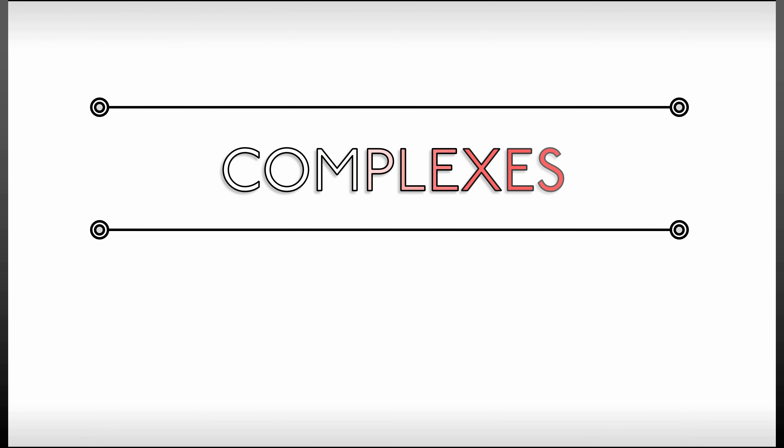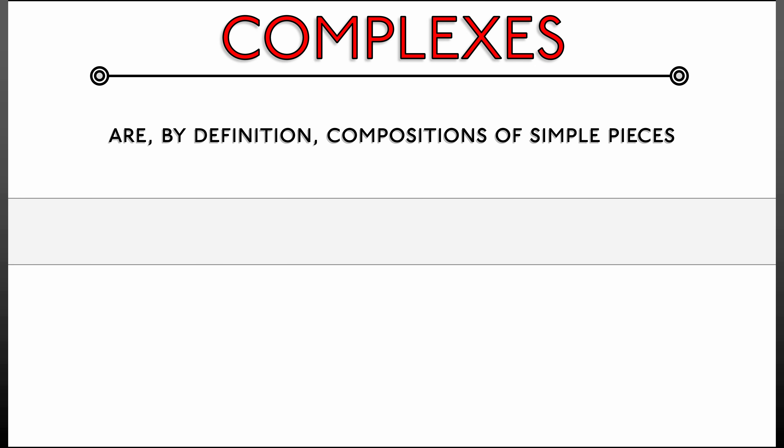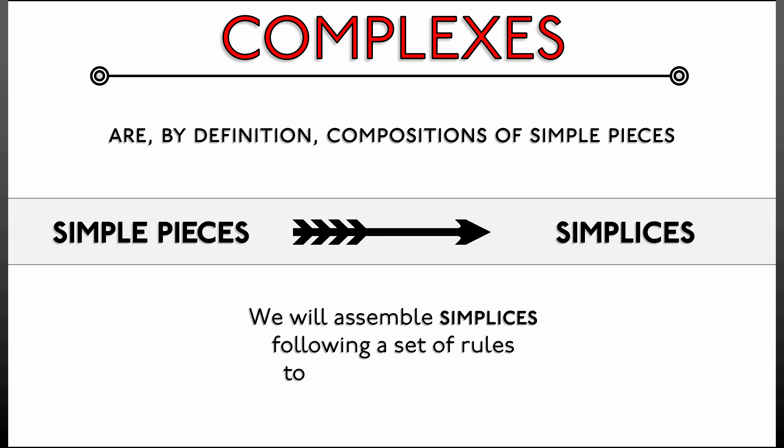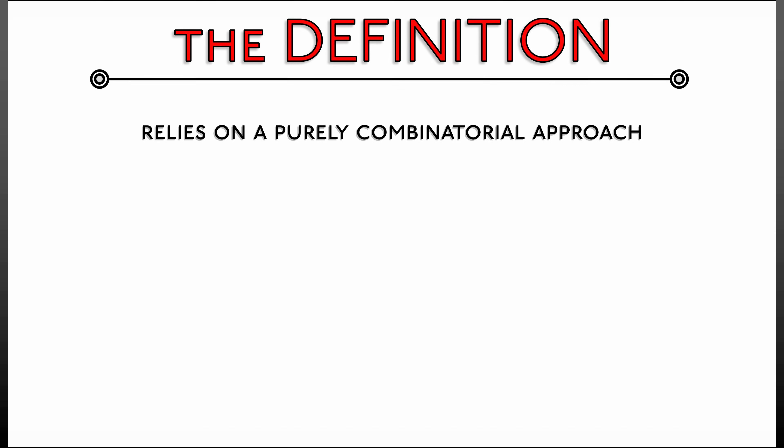Let's begin with the notion of a simplicial complex. Complexes are, by definition, compositions of simple pieces. These simple pieces we're going to call simplices. And the idea is that we're going to assemble simplices following a certain set of rules to obtain complexes. The definition is going to be straightforward. It's going to rely on a purely combinatorial approach.